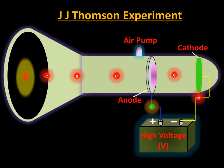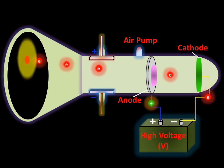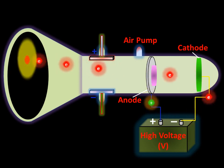This tube is called a cathode ray tube because the particles are emitted from the cathode. In order to test the properties of these particles, Thomson placed two oppositely charged electric plates. He observed that the particles deflected away from the negatively charged plate and toward the positively charged plate, indicating that these particles are negatively charged.